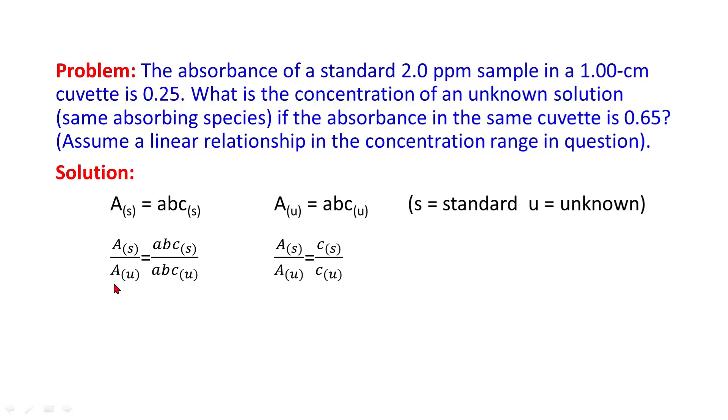Absorbance of the standard by absorbance of the unknown comes out to be concentration of standard by concentration of unknown. From here we can find out concentration of unknown which comes out to be 5.2 ppm.